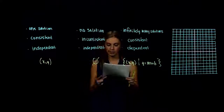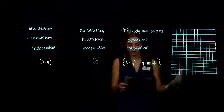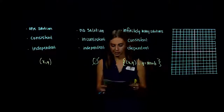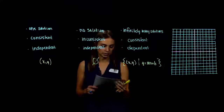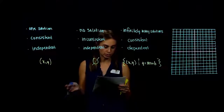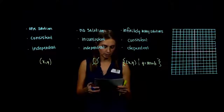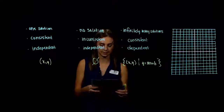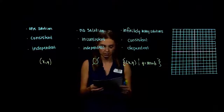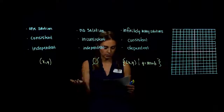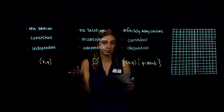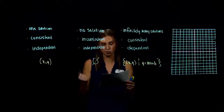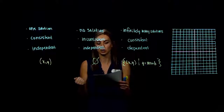On the next page, for all the systems shown, discuss the number of solutions for each and classify the system. We don't need to find the exact solution coordinates unless visible, but mark them if you can. Work through them from upper left, moving right, then down to the next row.